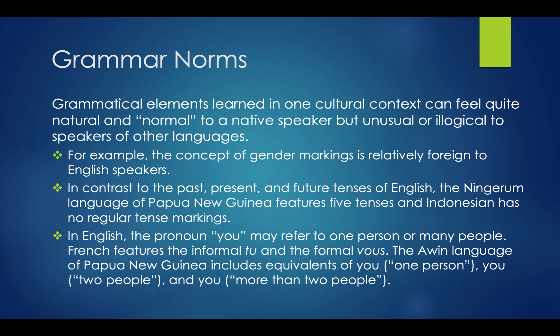The variety found in languages across the world can be amazing. English has three tenses: present, past, and future. The Ninjaram language of Papua New Guinea has five tenses, while Indonesian has no regular tense markings — you don't conjugate verbs, because there are no distinct verb forms corresponding to different tenses. We'll talk about a specific example comparing English to Hopi in a few slides — does this carry over to different ways of structuring the world? That's the idea to start thinking about.